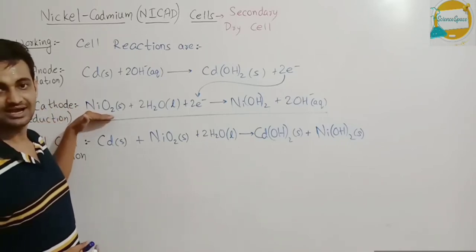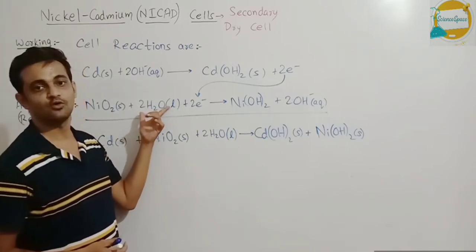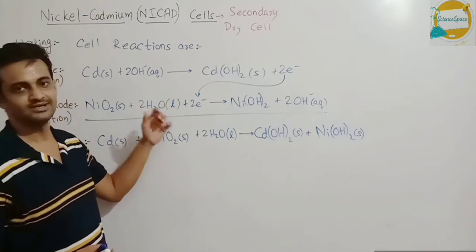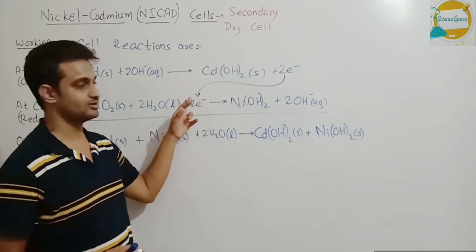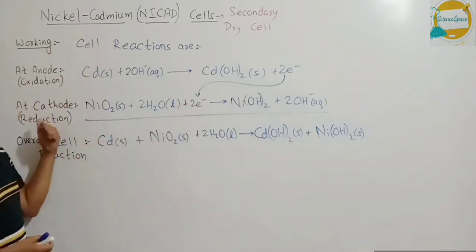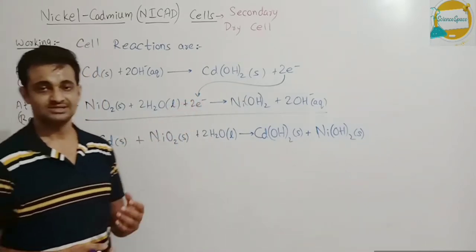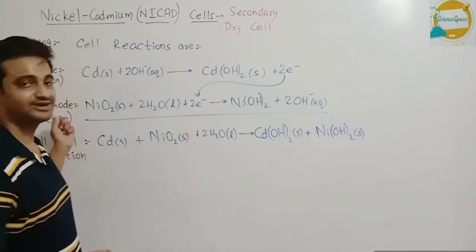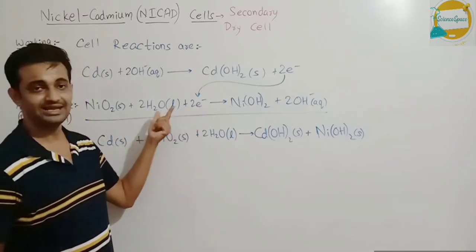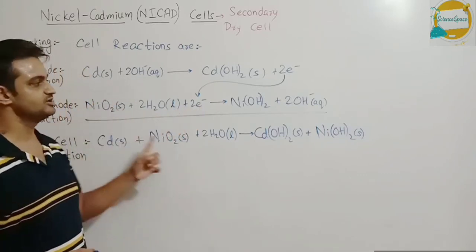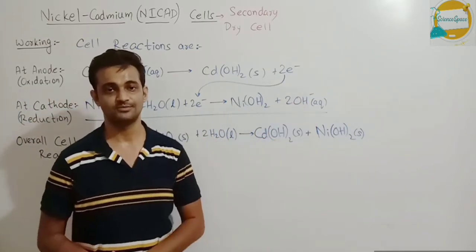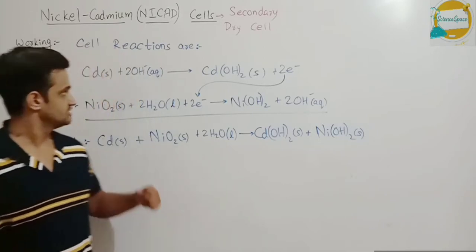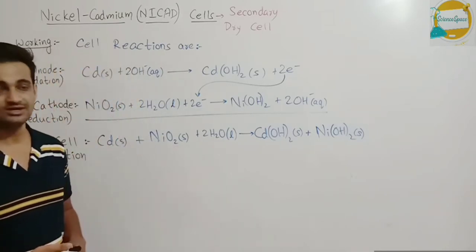Ye hydroxyl ions do electrons release kareenge aur form hooga cadmium hydroxide and next nickel oxide on the cathode terminal. Cathode terminal ke opar nickel oxide ye combine karra hai karega water ke saath jo electrolyte me present hai and two electrons from this reaction. Is reaction se ane wale 2 electrons ko accept kiya jalega at the cathode. This gain of electrons is called reduction. So by gaining electrons nickel oxide will reduce to nickel hydroxide and hydroxyl ions will be formed.